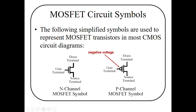MOSFETs have two types: N-channel MOSFET and P-channel MOSFET. For the N-channel MOSFET or NMOS transistor, you can see the gate terminal, drain terminal, and source terminal. We apply voltage at the gate terminal to control the current between drain and source terminals. This is the symbol of a P-MOS transistor — again, gate terminal, drain terminal, and source terminal. The P-MOS transistor is shown with the bubble sign.